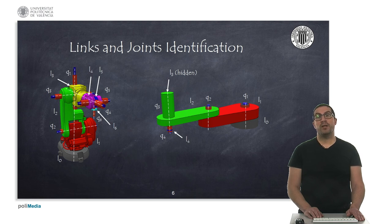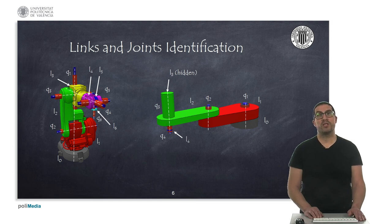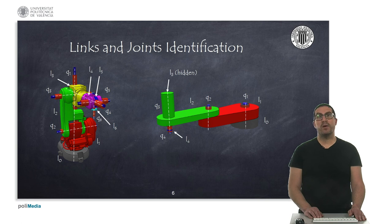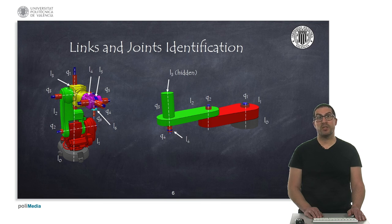In order to apply this method, we need to identify which are the links and joints of the robot. You can rely on the technical specifications. Link L0 is the fixed link, and from there we name links from L1 to LN. We also name joints from Q1 to QN. Here we see an example of two robots — one with seven links and six joints, and the other with five links and four joints. We will assume that the configuration shown in the pictures is the one with all joints at position or angle zero.